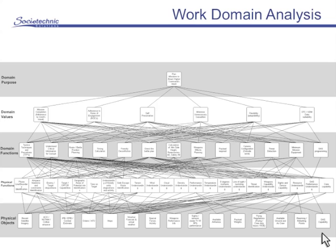The values we use to evaluate this are things like mission completion, adherence to rules of engagement, self-preservation, and minimising casualties. The top half of the diagram, down to the point where it says domain functions, is really talking about everything specific to helicopter mission planning. The base of the diagram lists the physical objects and what they can do — the physical functions — independently of the domain purpose. So here we're talking about maps, which allow us to develop a terrain understanding, and weather forecasts which allow us to develop a wind understanding. These physical functions can be applied to a whole host of other domains. The lines between levels describe the links and show how the model connects together.